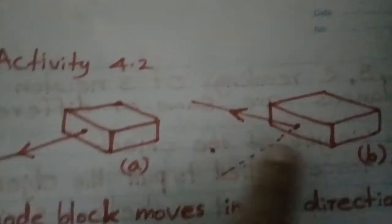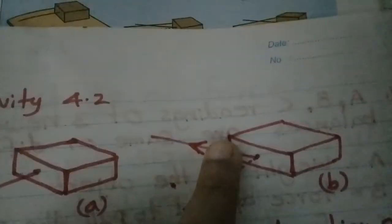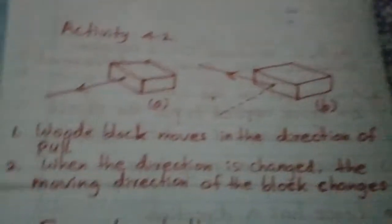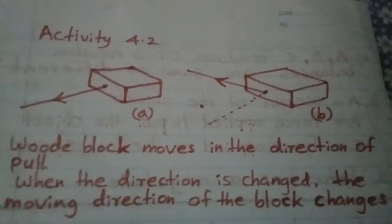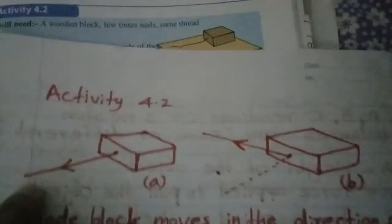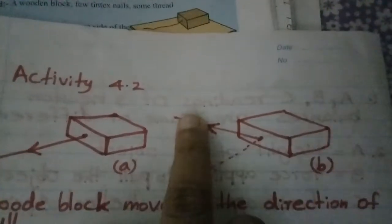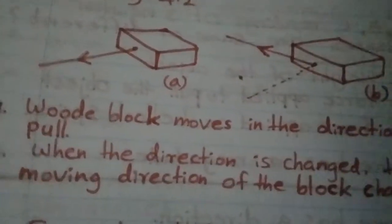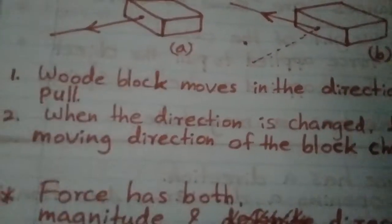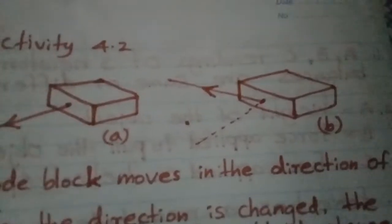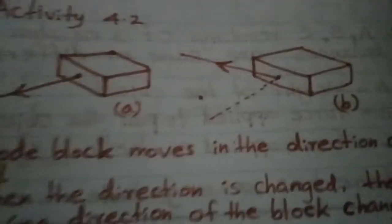Can you get the same result by pulling in different directions? The wooden block moves in the direction of the pull. If you apply force in one direction it moves that way, but if you change the direction of the pull, the block moves in a different direction. When the direction is changed, the moving direction of the block also changes.